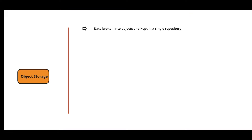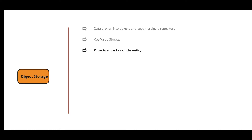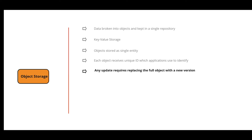Next, let's look at object storage. In object storage, data is broken into discrete units called objects and kept in a single repository. It is a key-value storage where objects are stored as a single entity — unlike files in folders or blocks on servers. Each object receives a unique ID that applications use to identify it, and each object stores metadata information about the files stored within it.